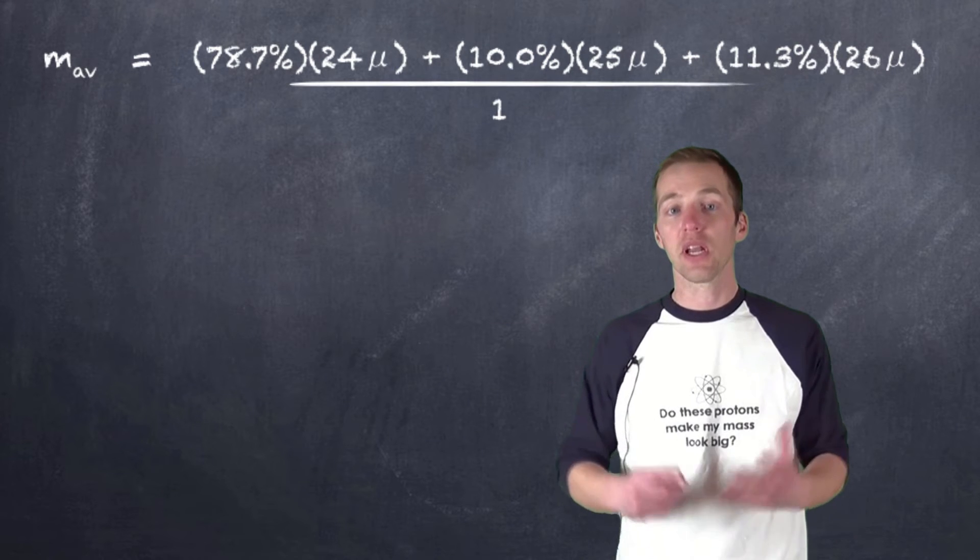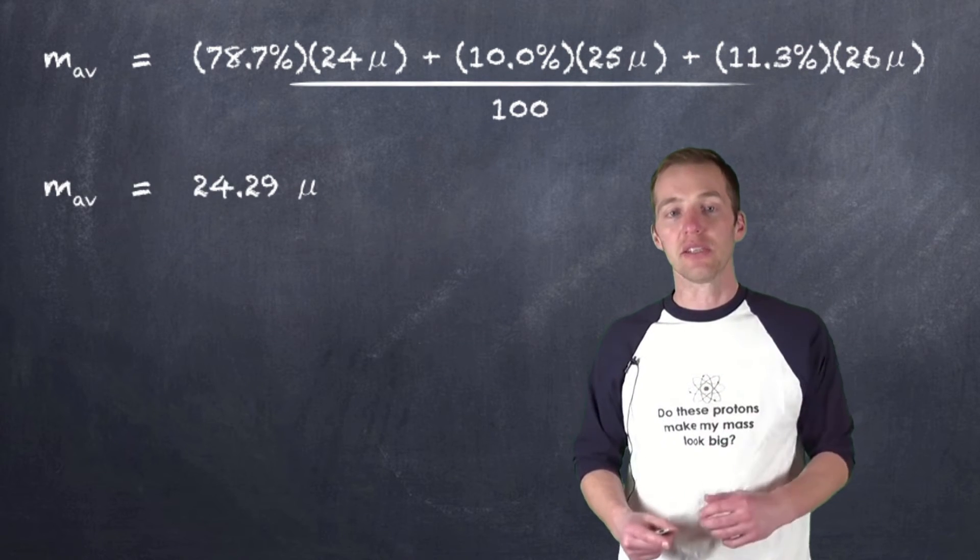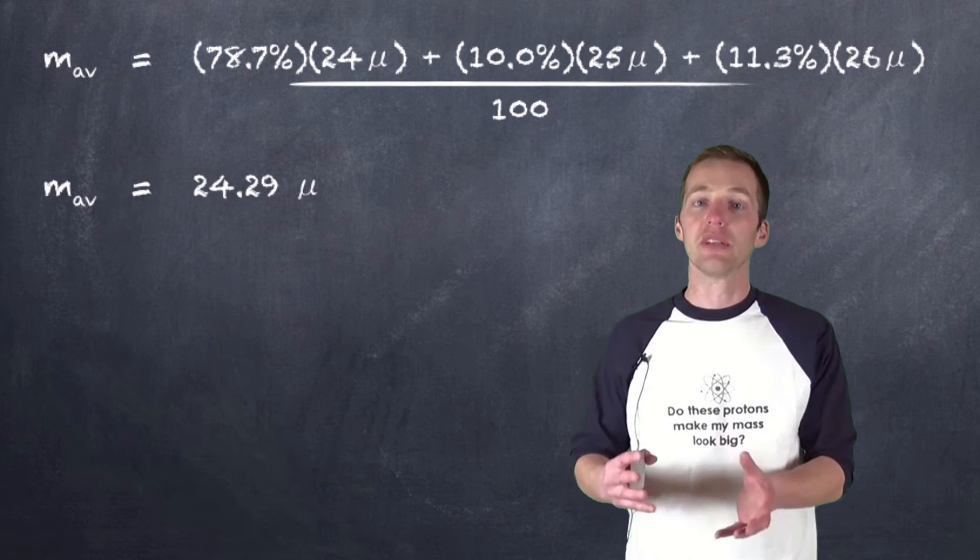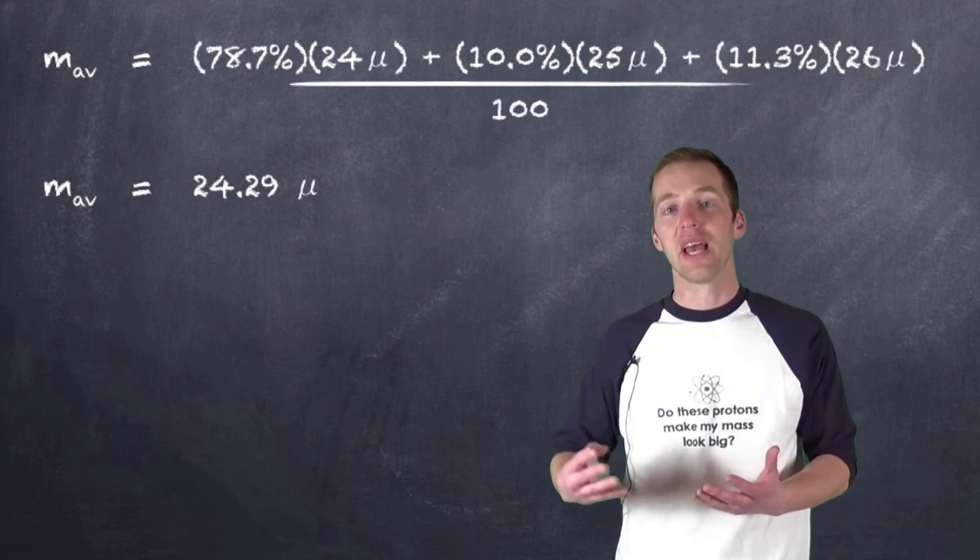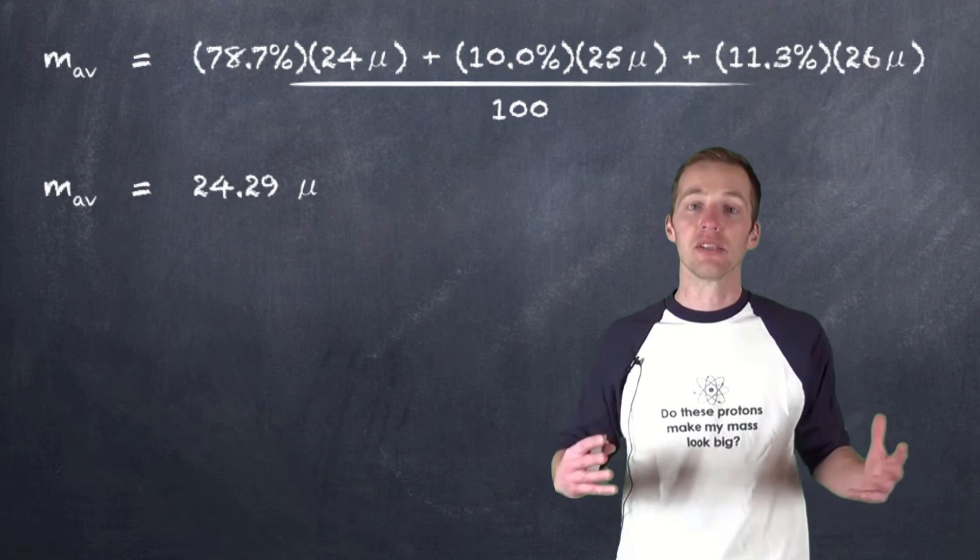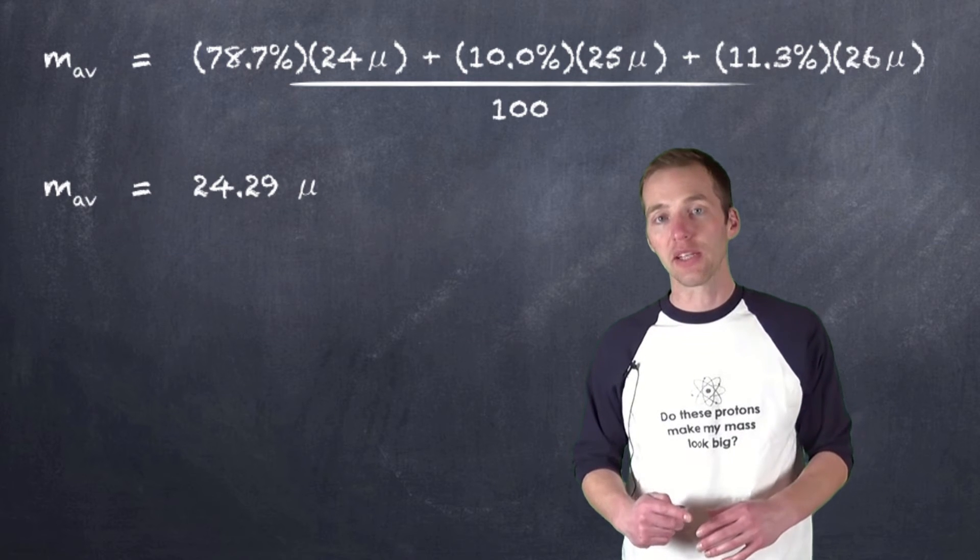We divide the whole thing out of 100, and ultimately we come up with our value. And the value in this case is 24.29, and we can see that it's more heavily weighted towards the 24 than it is towards any of the other values, because the magnesium-24 is the most common naturally occurring isotope.